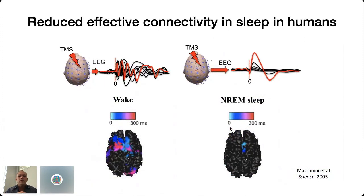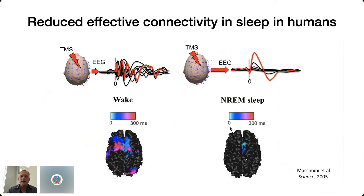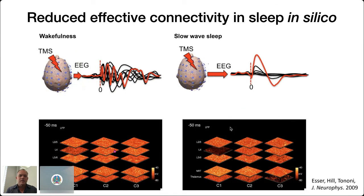The work of Marcello Massimini has shown using TMS-EEG that there's a significant difference in effective connectivity during sleep in humans. Stimulating in one location during wakefulness results in widespread differentiated activation of brain areas, whereas during non-REM sleep stimulating the same area results in a large-amplitude local response that does not spread in a differentiated way across different brain areas. We used the same thalamocortical computer model to show it could recapitulate this observed change in effective connectivity — it's really the alteration in excitability and the downstates that are interfering with the effective connectivity in the model.